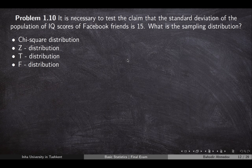The last problem in the first section: it is necessary to test the claim on the standard deviation of the population of IQ scores of Facebook friends. If we are going to test a claim on standard deviation, we need to use the distribution of standard deviations, which is called the chi-square distribution. The chi-square table gives us areas and critical values on the distribution of the standard deviation.